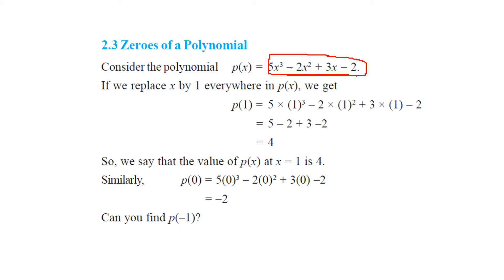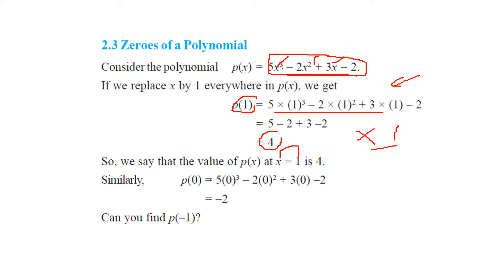If I put 1 in the place of x, I get 4. If you just compute it, you get 4. So 1 is not a zero. x equal to 1 is not a zero. If I put x equal to 0, I get minus 2. So 0 is also not the zero of the polynomial.